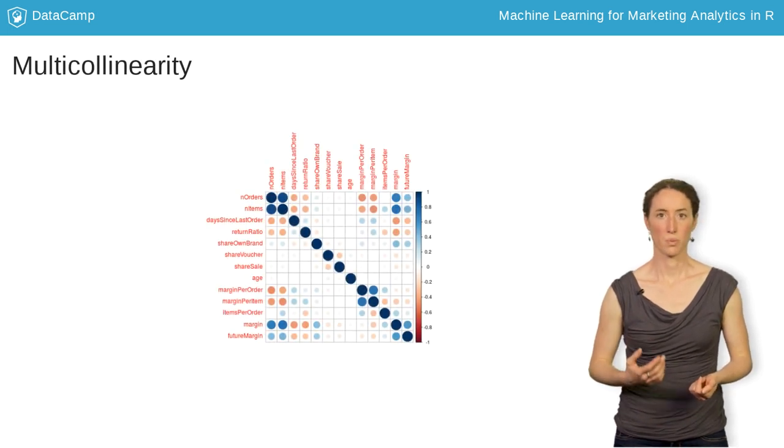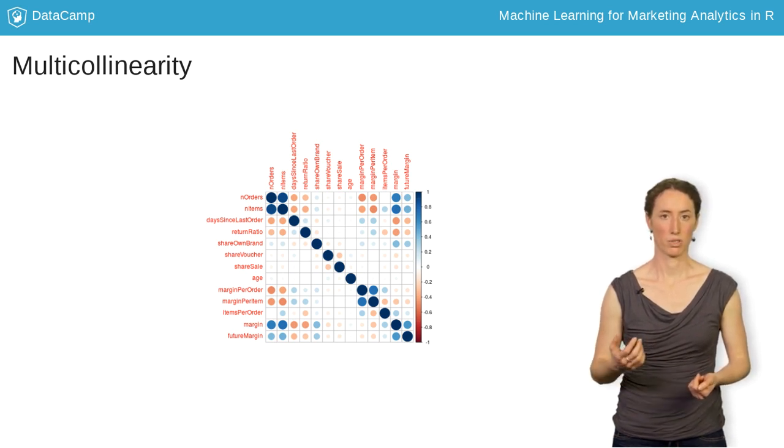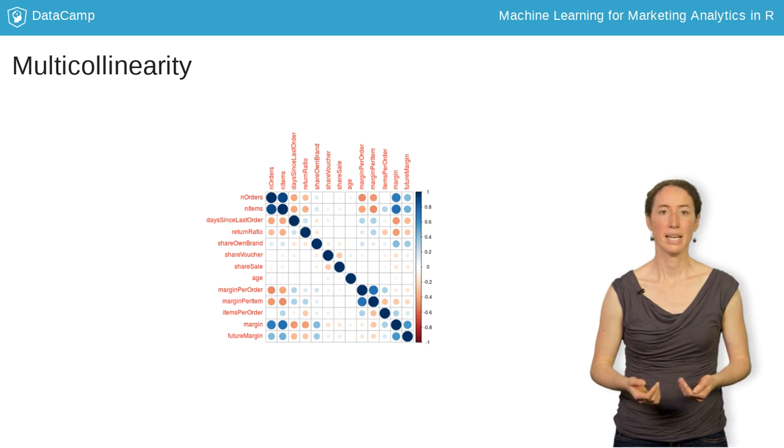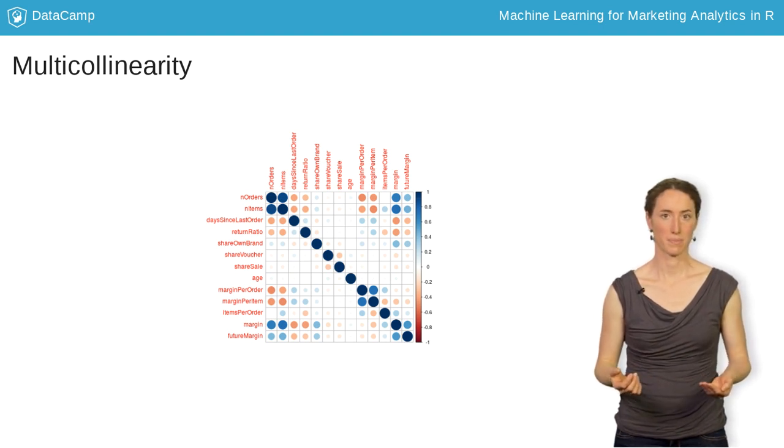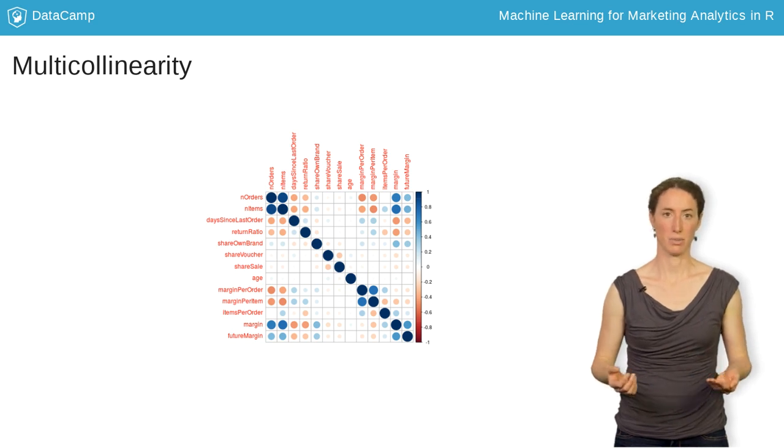Multicollinearity is one threat to multiple linear regression. This occurs whenever one explanatory variable can be explained by the remaining explanatory variables. Then the regression coefficients become unstable and the standard errors reported by the linear model are underestimates.